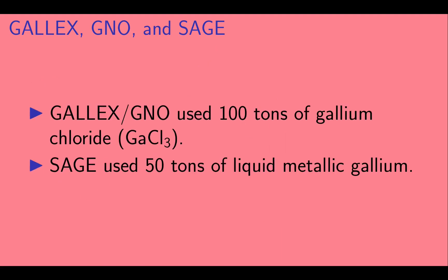GALLEX and GNO looked for this reaction using 100 tons of gallium chloride. Meanwhile, SAGE used 50 tons of liquid metallic gallium.